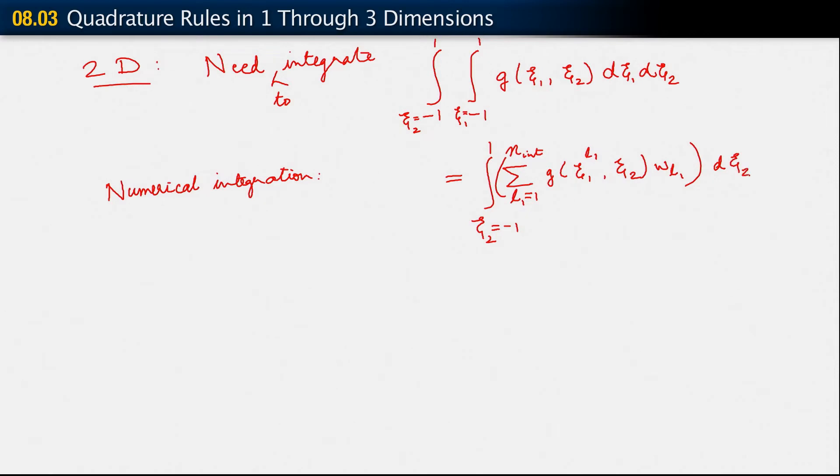And then we come back and do the same thing over ξ2. So numerical integration would give us this. And then, as another step, we would get now sum L2 equals 1 to nint. Sum L1 equals 1 to nint, g, ξL1, sorry, ξ1 L1, ξ2 L2, WL1, WL2, and we're done.